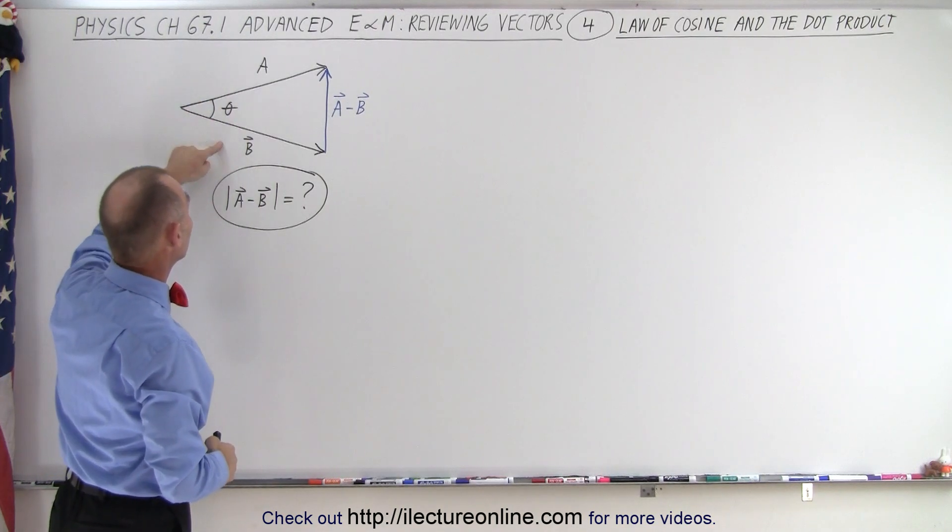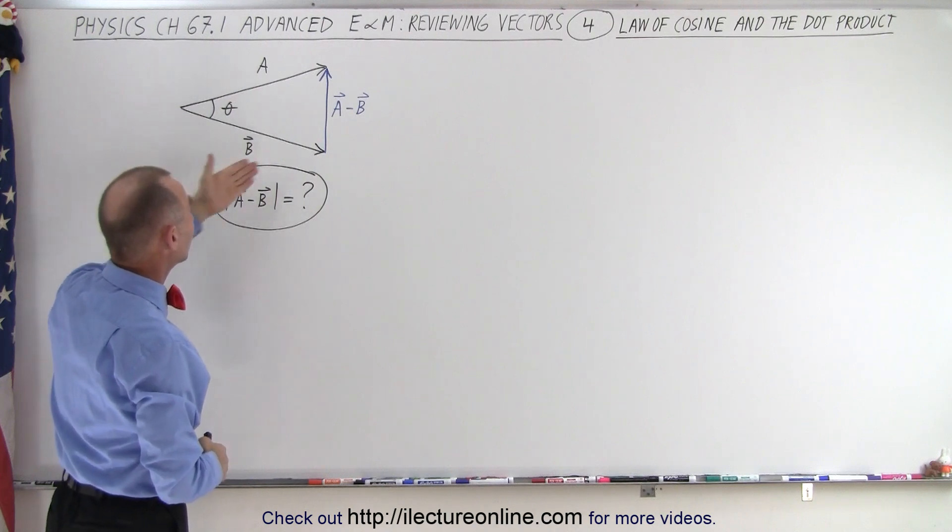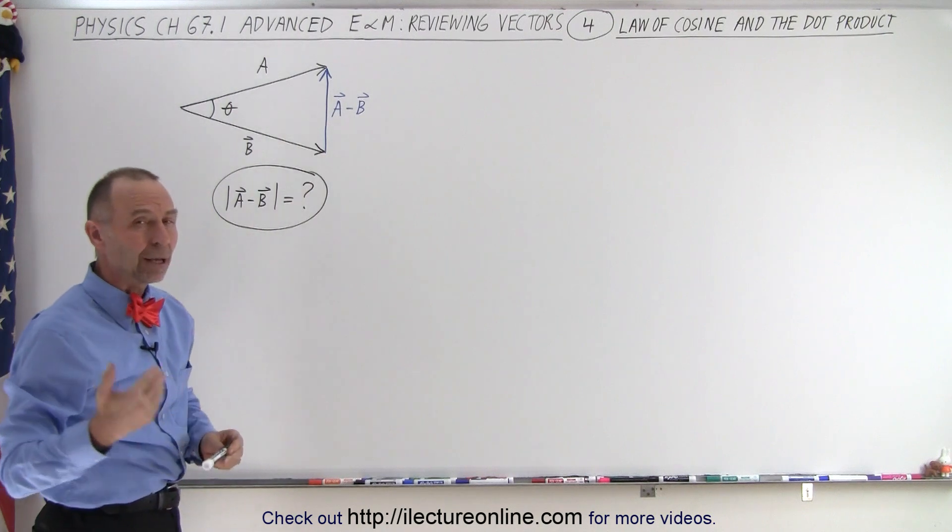well, if I know the magnitude of a and I know the magnitude of b, and know the angle between them, using the law of cosine, I should be able to find the magnitude of a minus b. So let's see how that works.